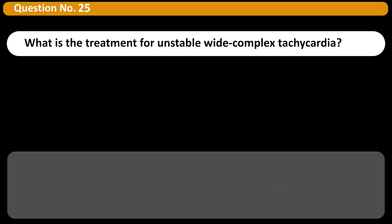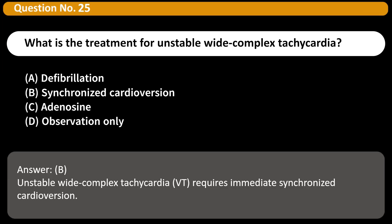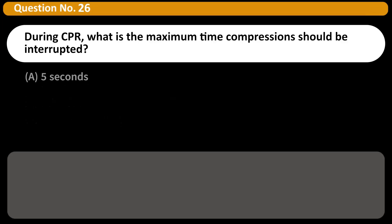What is the treatment for unstable wide complex tachycardia? A. Defibrillation. B. Synchronized cardioversion. C. Adenosine. D. Observation only. Answer: B. Unstable wide complex tachycardia (VT) requires immediate synchronized cardioversion.